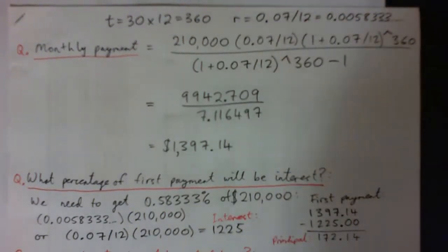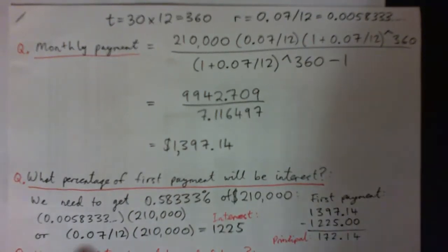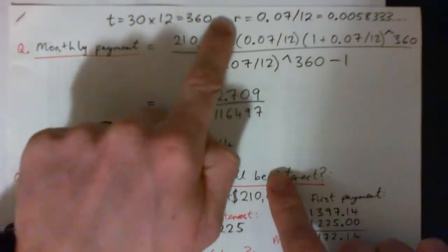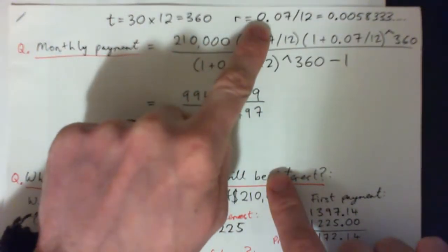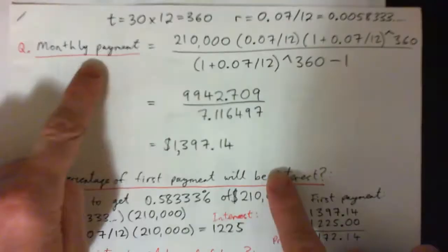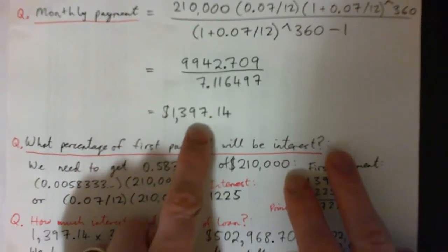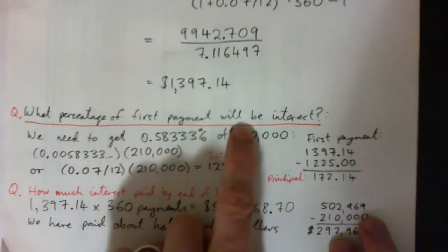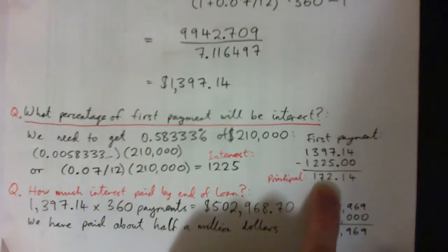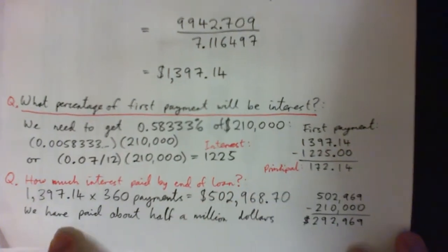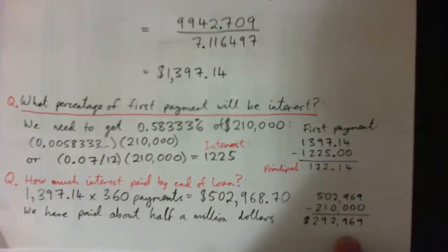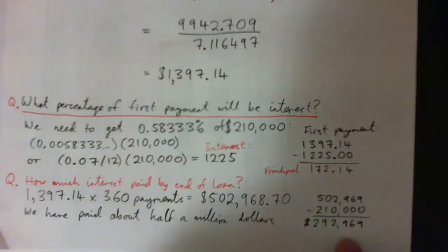Hi everyone. These are the answers for the questions on the review quiz. For a loan of $210,000 at a monthly interest rate of 7% fixed, the monthly payment works out to be this number here. The next one is what percent of the first payment will be interest — that's $172.14. And how much interest is paid by the end of the loan? That's $292,969.